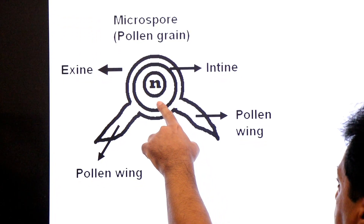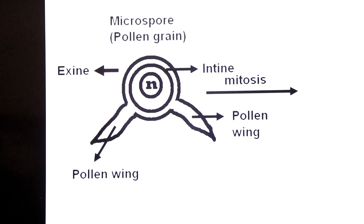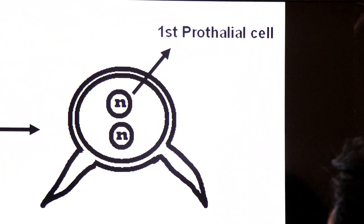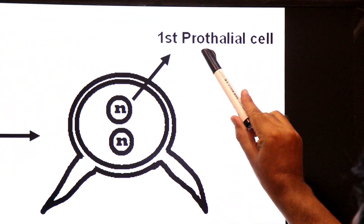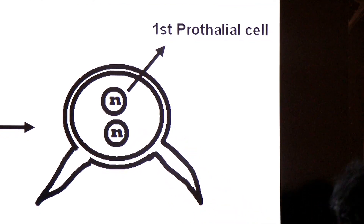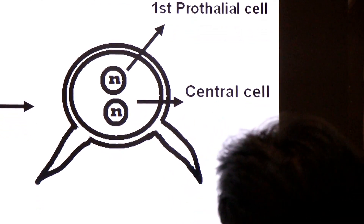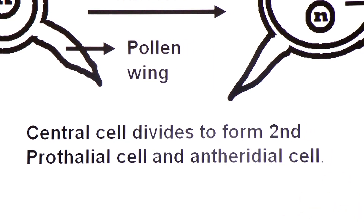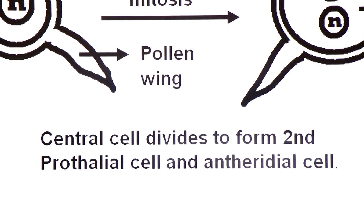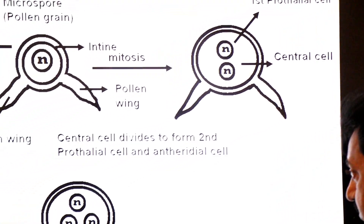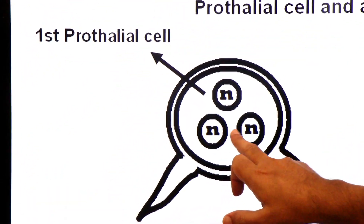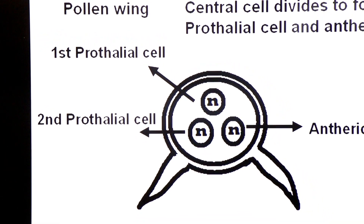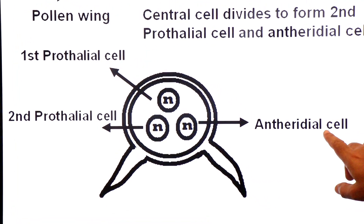The microspore divides by mitosis to produce two cells: the first is the prothallial cell and the second is the central cell. The central cell then divides to form a second prothallial cell and an antheridial cell.